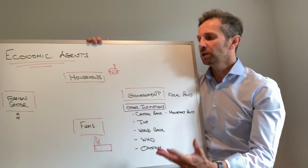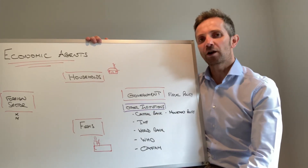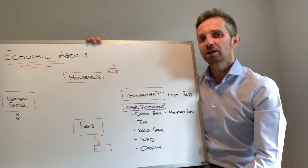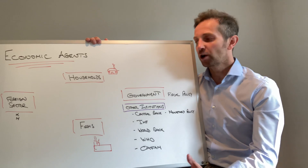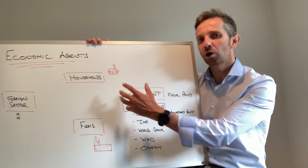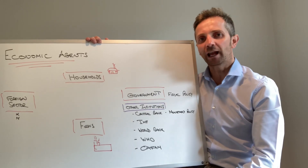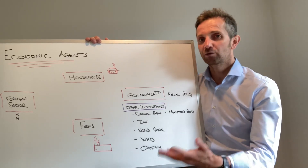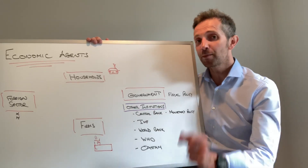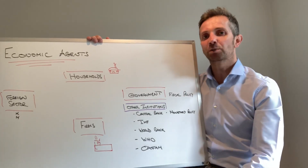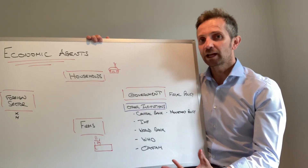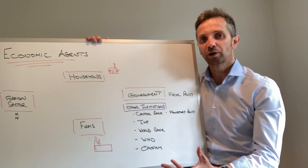So, households. We tend to think of households as providing the labour for the firms — they go to work in order to earn an income. And so we often therefore consider the household's role in the consumption element of aggregate demand, remembering that aggregate demand is C plus I plus G plus X minus M, with C being the consumption element by the households, generally on consumer goods and services.